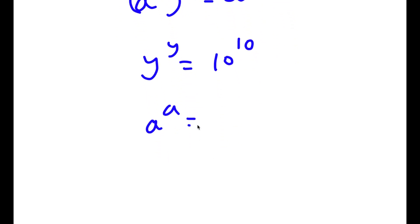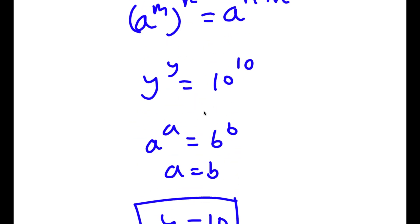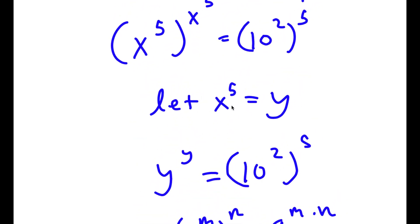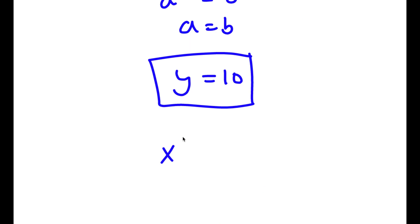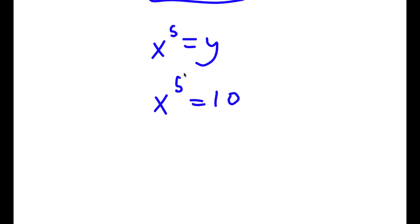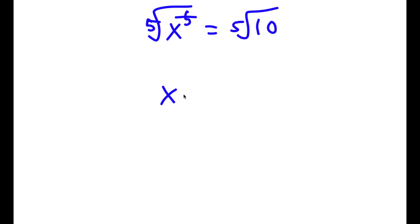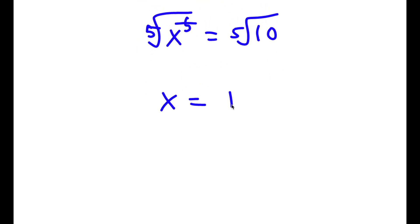Now if I have something in the form a to the power of a is equal to b to the power of b, this means that a is equal to b. So in this case y is equal to 10. However we aren't done yet, because remember we said x to the power of 5 is equal to y. So x to the power of 5 is equal to 10. Now to solve this I'm going to take the fifth root on both sides. These cancel out and x is equal to the fifth root of 10, which can also be written as 10 to the power of 1 over 5.